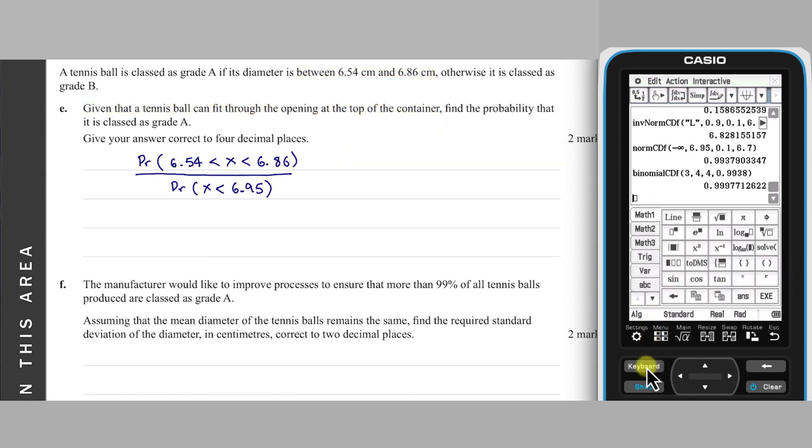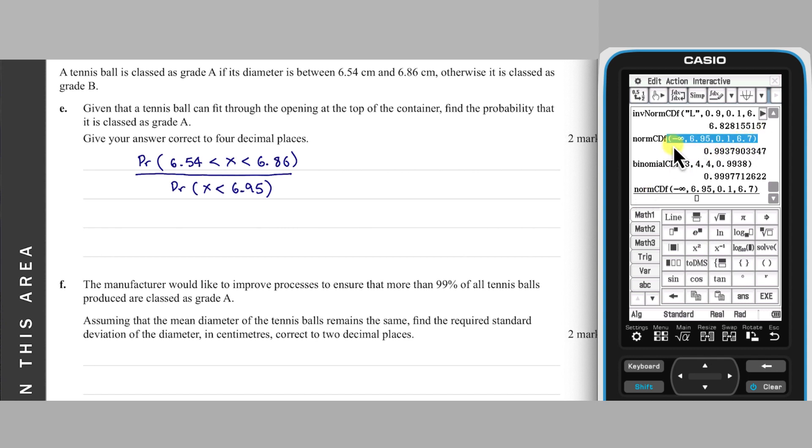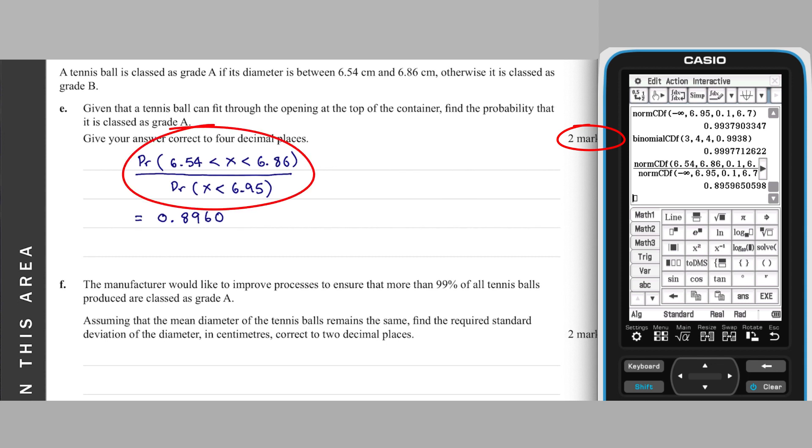I'm going to do it as a single fractional calculation to avoid round-off error. I'll paste the calculation from Part C into both numerator and denominator, and then edit the bounds in the numerator. With this done, we get a probability of 0.8460 to four decimal places. Note, as this question is worth two marks, it would be unwise just to write down the probability calculated. A line of working, like the conditional probability formulation that I have written, is required.